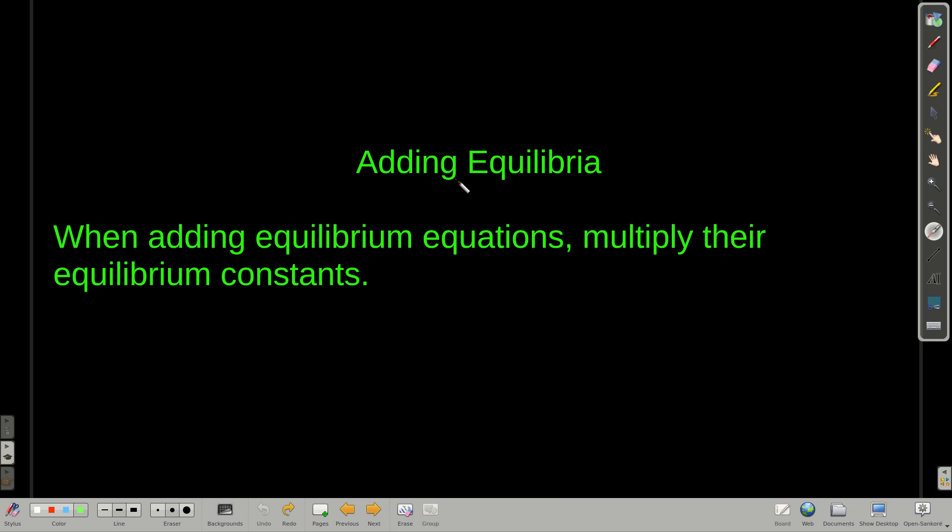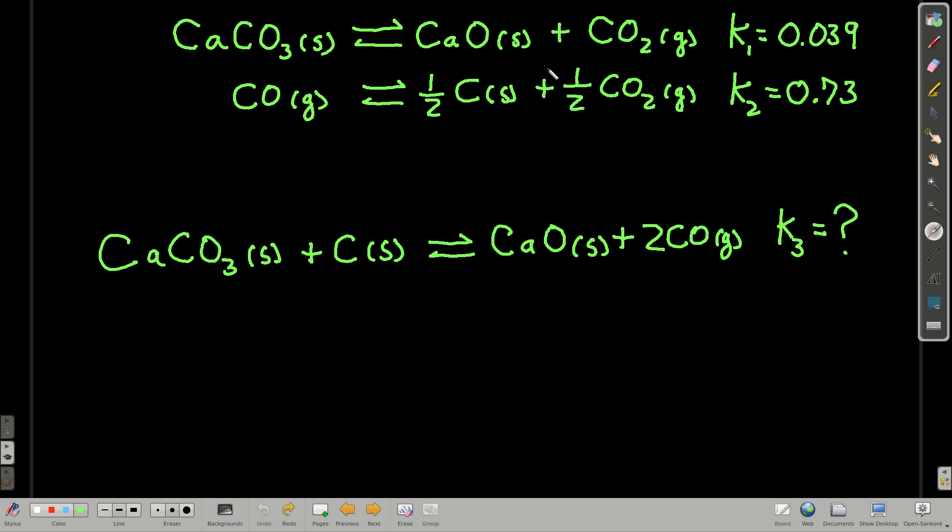So adding equilibrium equations. When you add equilibrium equations, to get the resulting equilibrium constant, you just multiply the equilibrium constants of the equations you're adding. For example, let's say we know the equilibrium constants for these two reactions. And we want to find the equilibrium constant for this reaction. Well, we're going to have to manipulate these equations. Let's say we can't do this experiment. We're going to manipulate these equations so that when we add them up, they equal this equation. And once we do that, once we've manipulated them, then we multiply the resulting Ks.